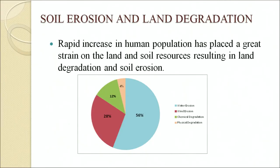A pie chart showing percentage of worldwide soil degradation: the blue part shows water erosion at 56 percent, the red part shows wind erosion at 28 percent, the green part shows chemical degradation at 12 percent, and the yellow part shows physical erosion at 4 percent.